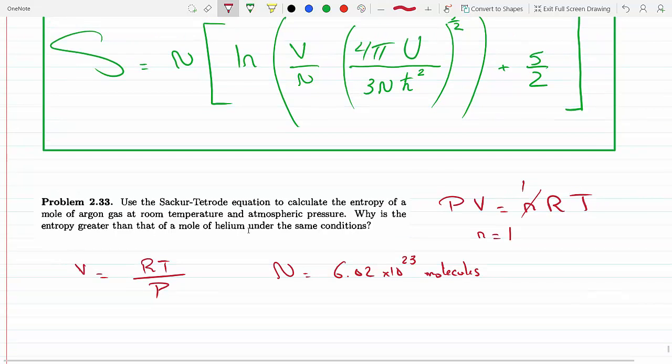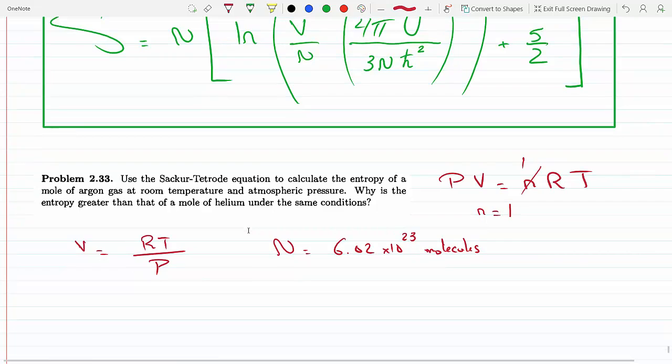Now we have V, we have N, we still have to find U. So U is the internal energy.